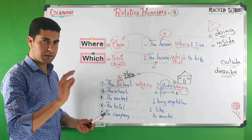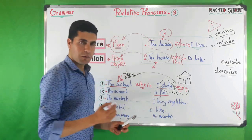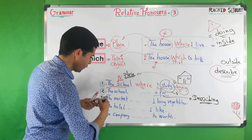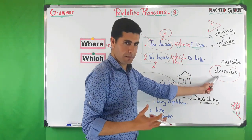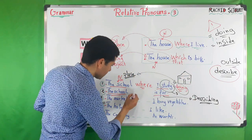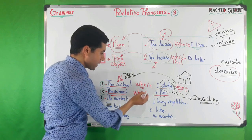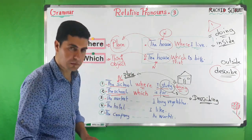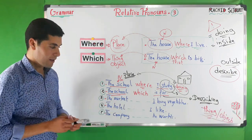Number two: 'The school is far.' Here we are describing the school — the noun is 'the school' and we are describing it from outside. So we say: 'The school which is far,' or we can also say 'the school that is far.'